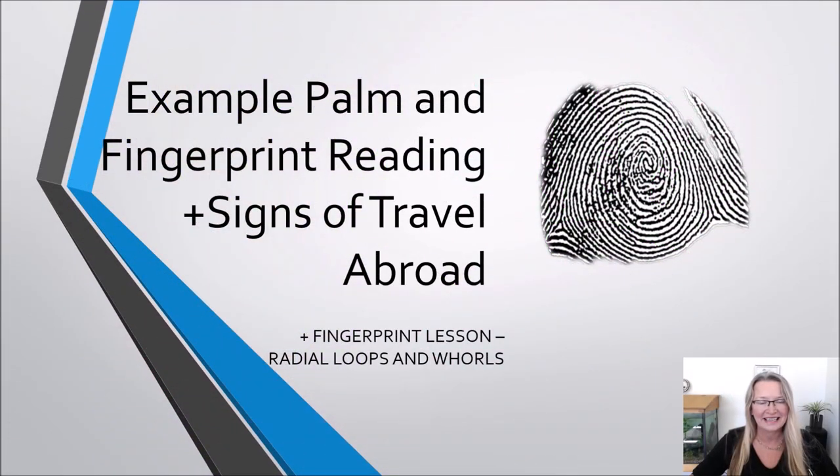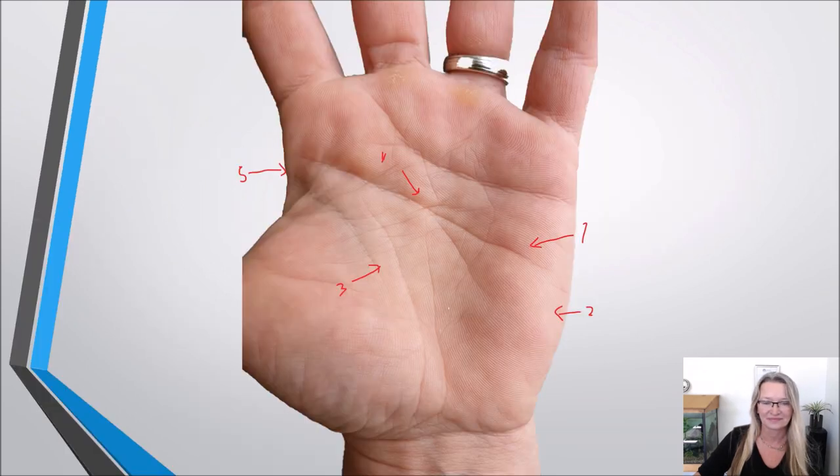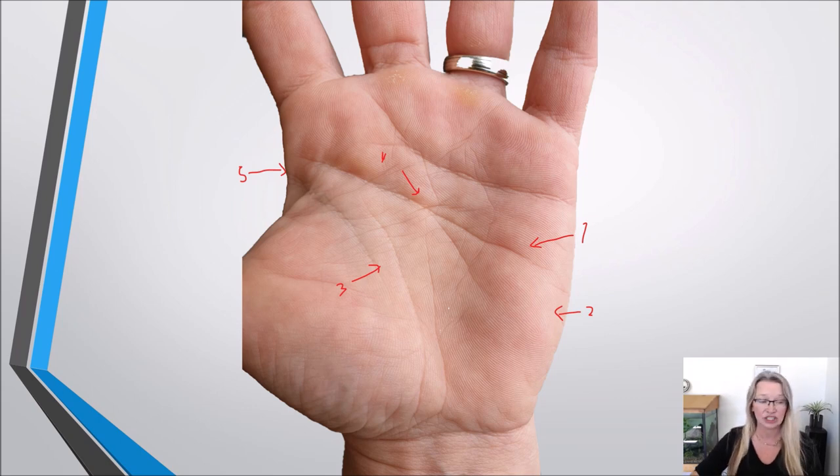Hi everybody. Welcome to another example reading. I've got an exciting lesson for you today to learn a bit more about the fingerprints. But firstly we're going to look at this lady's hands and we're going to see those signs of travel abroad. So that was the first thing that stood out for me. She's 41 and she said that she moved from one country to another about 20 years ago.